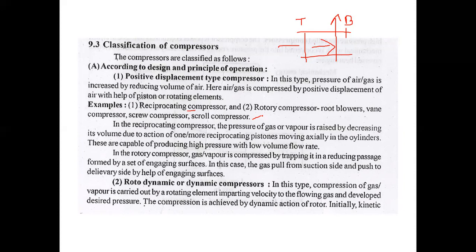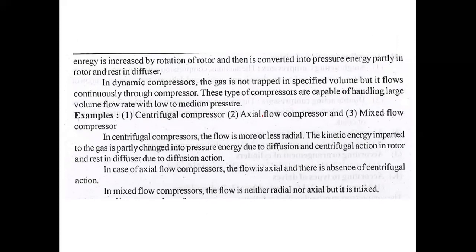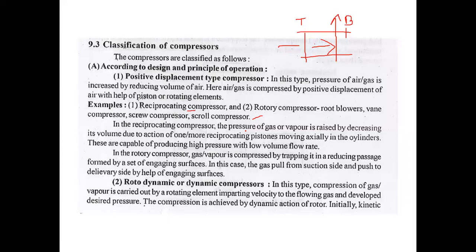The second type is the roto-dynamic or dynamic compressor. In this type of compressor, compression of gas is carried out by a rotating element that imparts velocity to the flowing gas and then develops the desired pressure. The compression is achieved by dynamic action of the rotor. Initially, kinetic energy is increased by rotation of the rotor and then converted into pressure energy, partially in the rotor and the rest in the diffuser. In dynamic compressors, the gas is not trapped in a specified volume but flows continuously through compression. These compressors are capable of handling large volume flow rates with low to medium pressure.